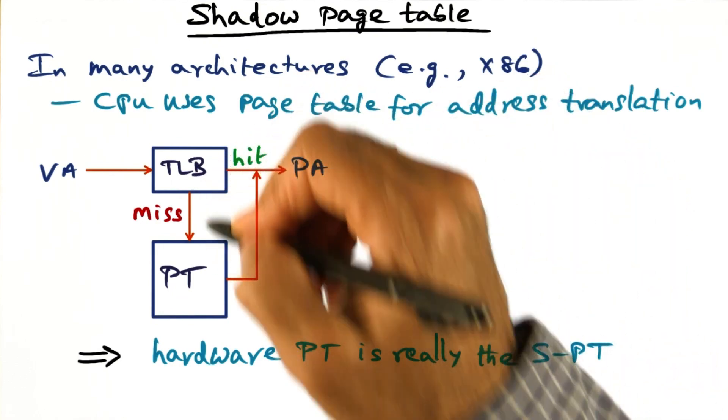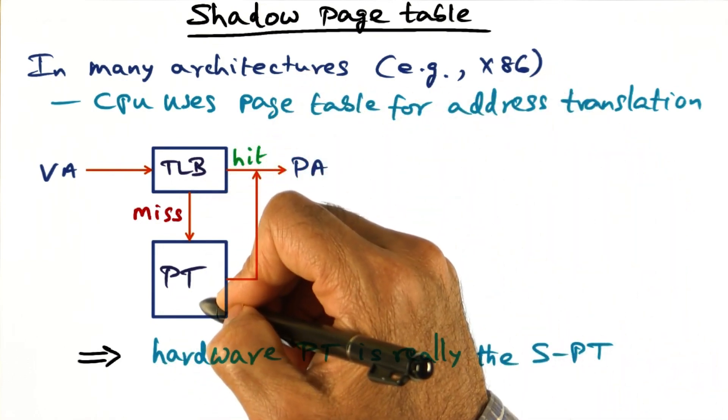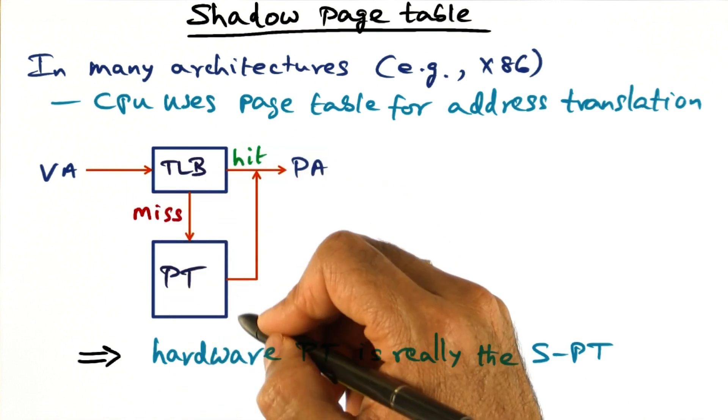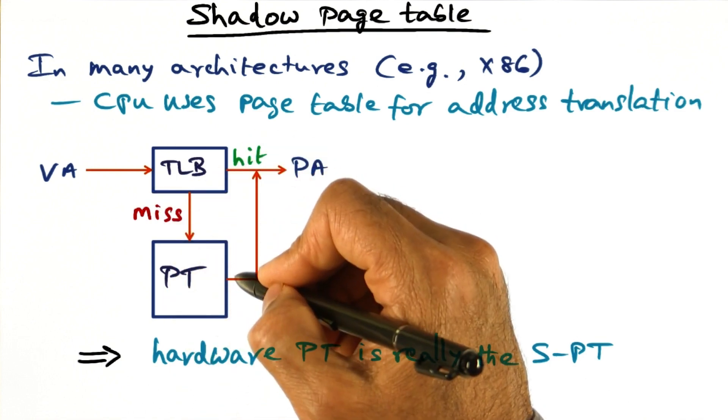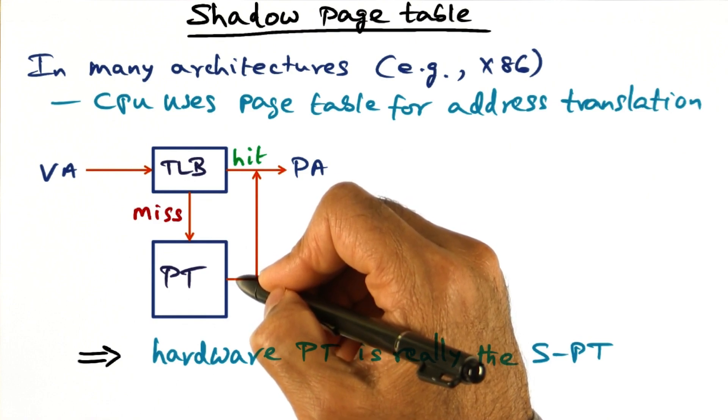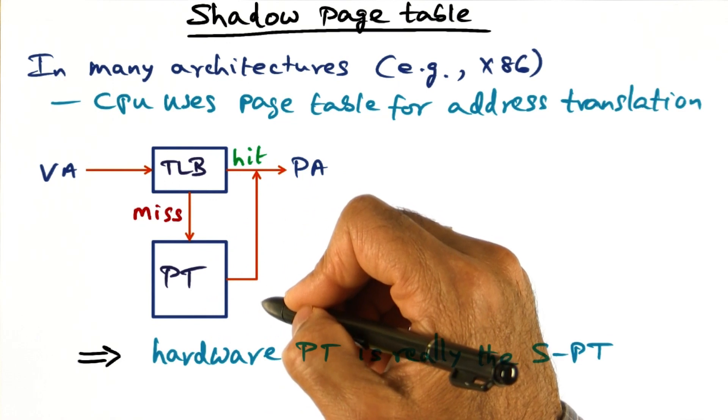In other words, both the TLB and the page table are data structures that the architecture uses for address translation. The page table is also a data structure that is set by the operating system for enabling the processor to do this translation.